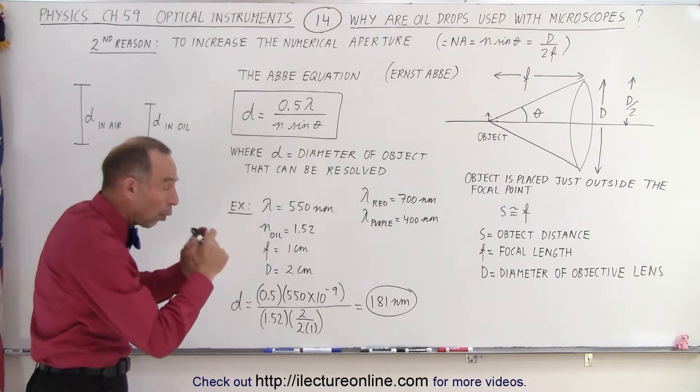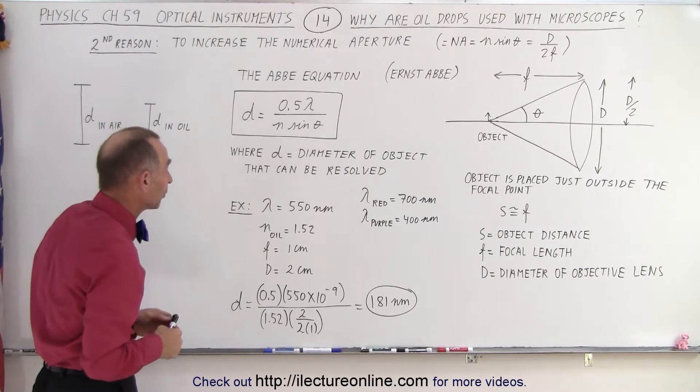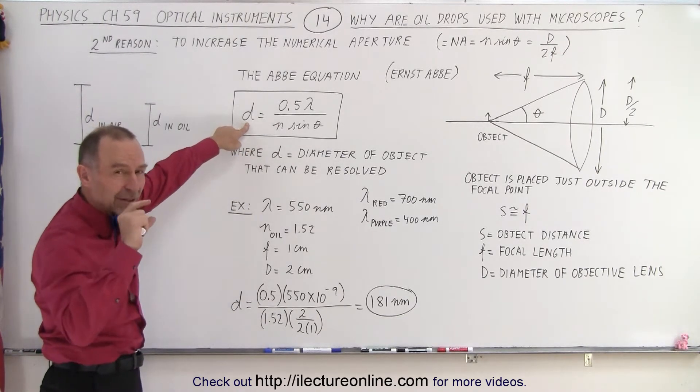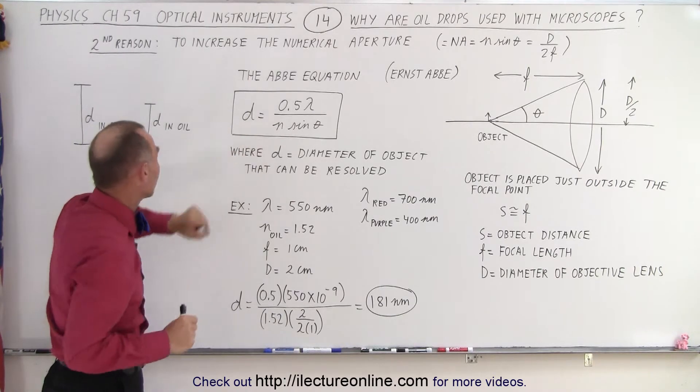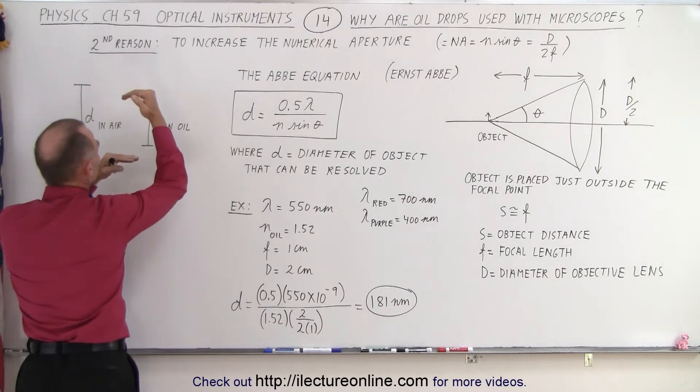and in this case by using oil we increase the index of refraction from air being 1 to oil being 1.52, it will reduce the size of the object that we're able to clearly discern. So here you can see this would be d in the air and there would be d in the oil.